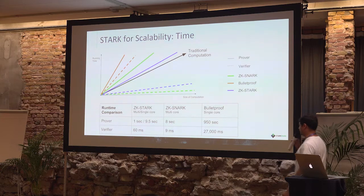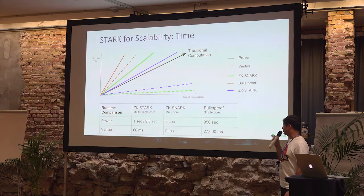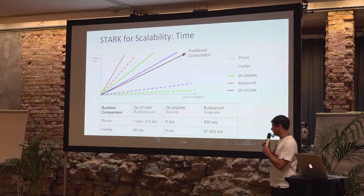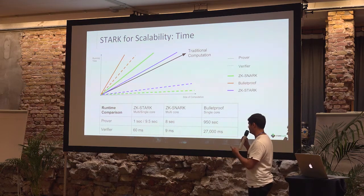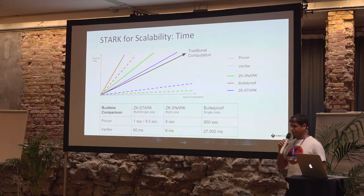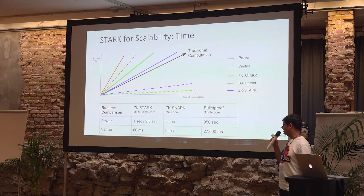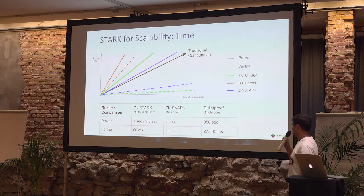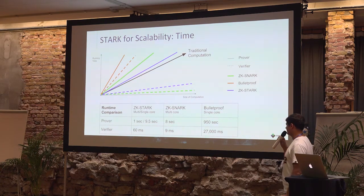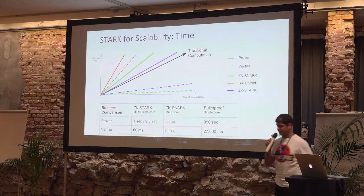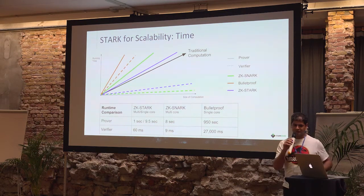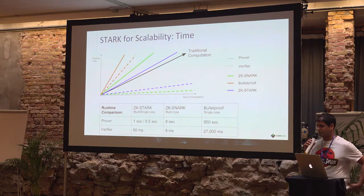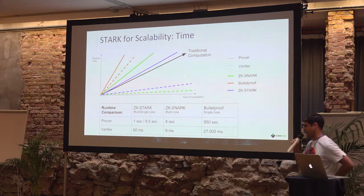To put some numbers: if you're looking at prover time, for a computation that takes one second to run the STARK prover on, the ZK-SNARK prover will take about eight seconds. This experiment was done on two machines — one single-core and one multi-core. The comparison between STARK and SNARKs was on the multi-core machine.